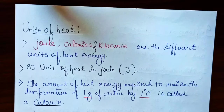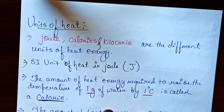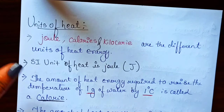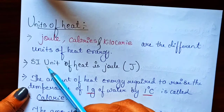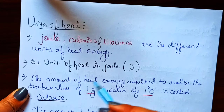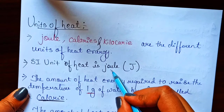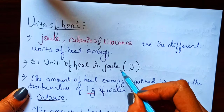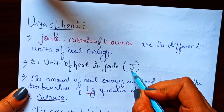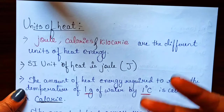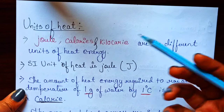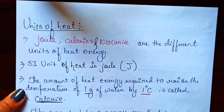Now, let's talk about the units of heat. Heat energy has units. The SI unit of heat — the internationally accepted unit — is known as the Joule, written with the symbol J. Along with Joule, there are two more units we commonly use: calorie and kilocalorie.